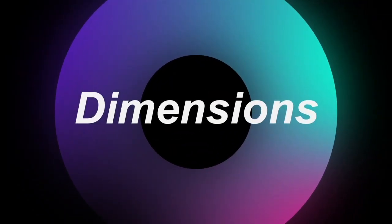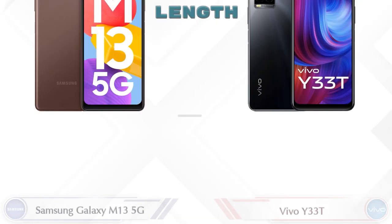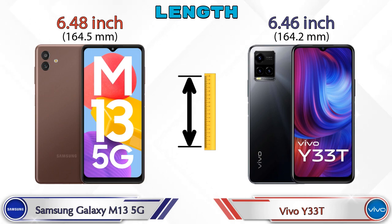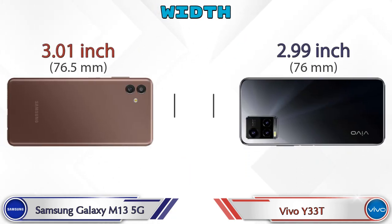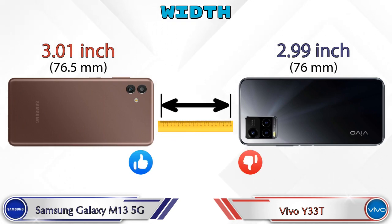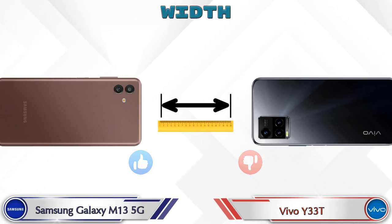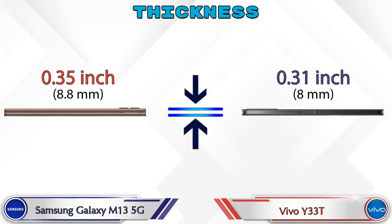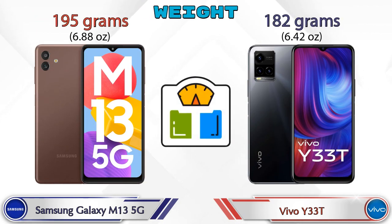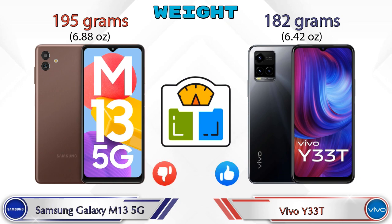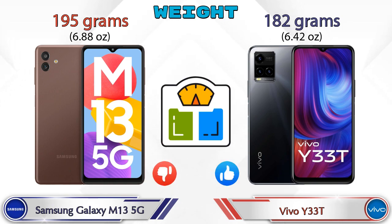Now let's check the details about dimensions. Length — Galaxy M13 5G is 6.48 inches and Y33T is 6.46 inches, which are almost the same. Width — Galaxy M13 5G is 3.01 inches and Y33T is 2.99 inches. Thickness — Galaxy M13 5G is 0.35 inches and Y33T is 0.31 inches. Weight — Galaxy M13 5G is 195 grams and Y33T is 182 grams.